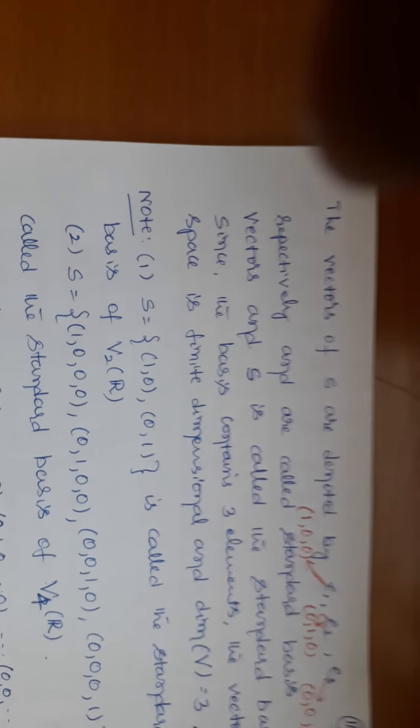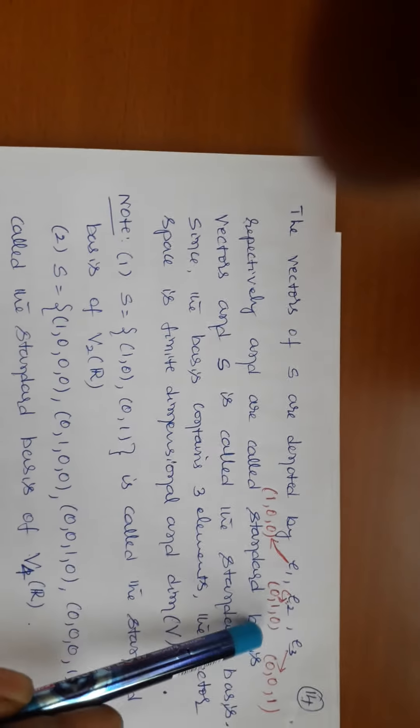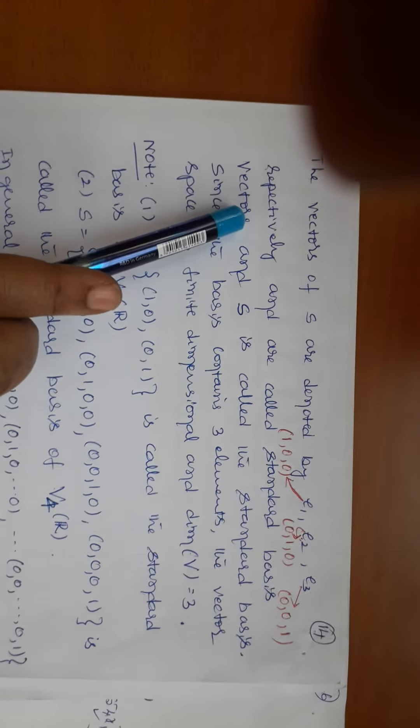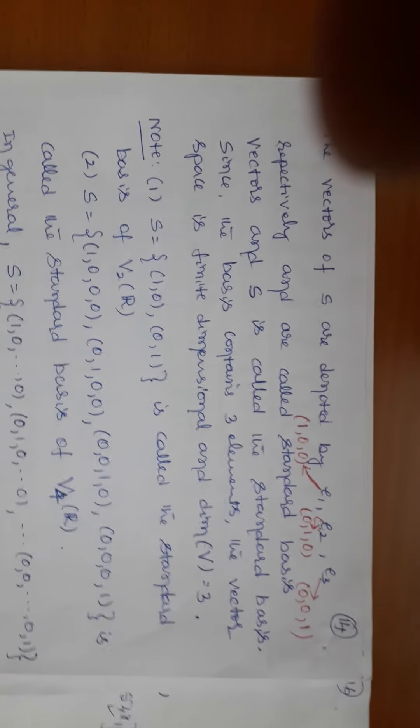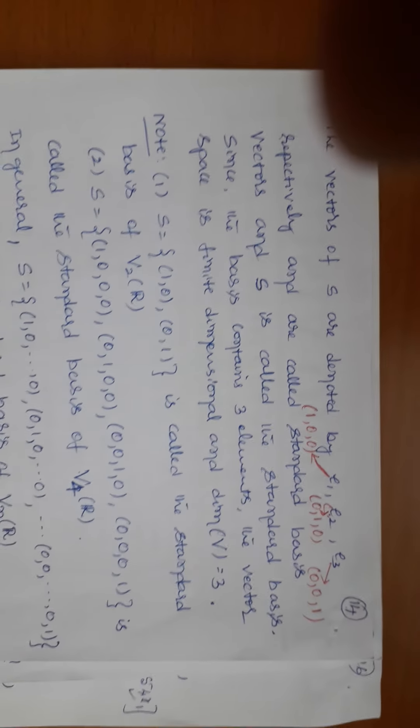Now I want to discuss one important thing about the vectors of S. The vectors I have taken are (1,0,0), (0,1,0), and (0,0,1). These vectors of S are denoted by E1, E2, E3 respectively, where E1 = (1,0,0), E2 = (0,1,0), and E3 = (0,0,1). These vectors are called standard basis vectors, and S is called a standard basis. Whenever we have vectors E1, E2, E3 like these, we say those vectors are standard vectors and the corresponding set is nothing but the standard basis for the corresponding vector space.